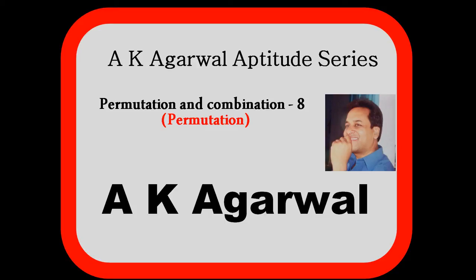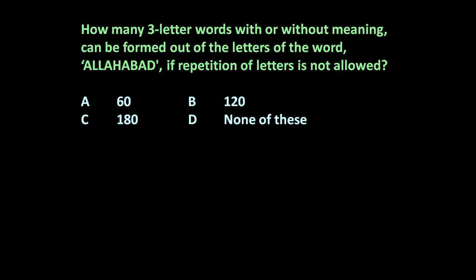Hello friends and welcome to AK Agrawal aptitude series. In this session we are going to learn a technique for solving a problem on permutation and combination. The given problem is: how many three-letter words, with or without meaning, can be formed out of the letters of the word Allahabad, if repetition of letters is not allowed?